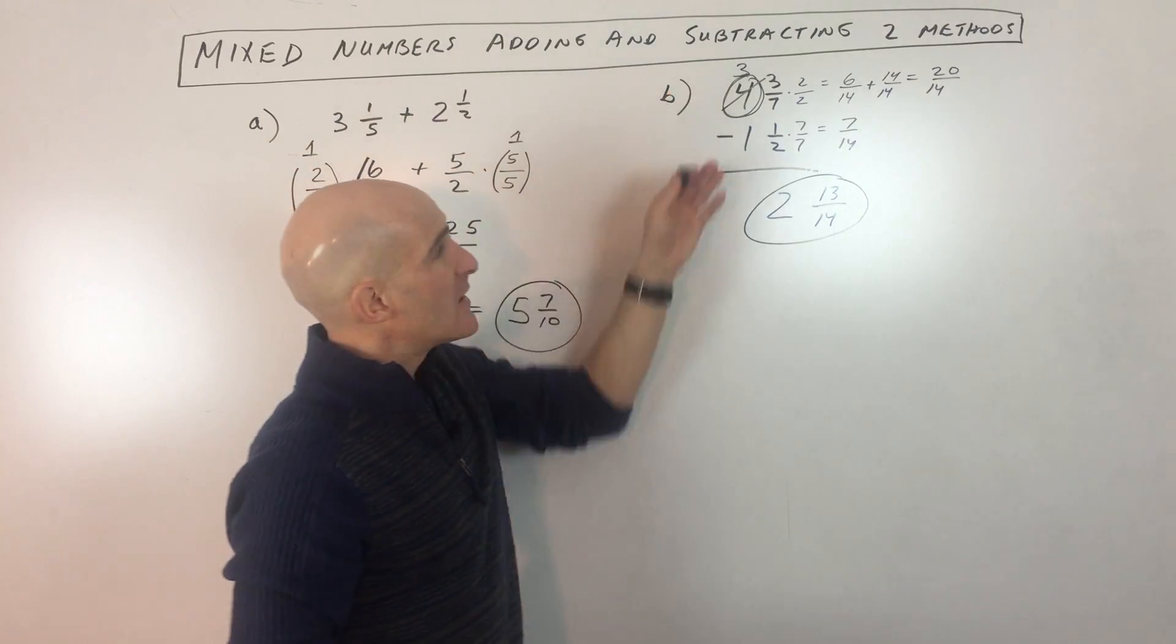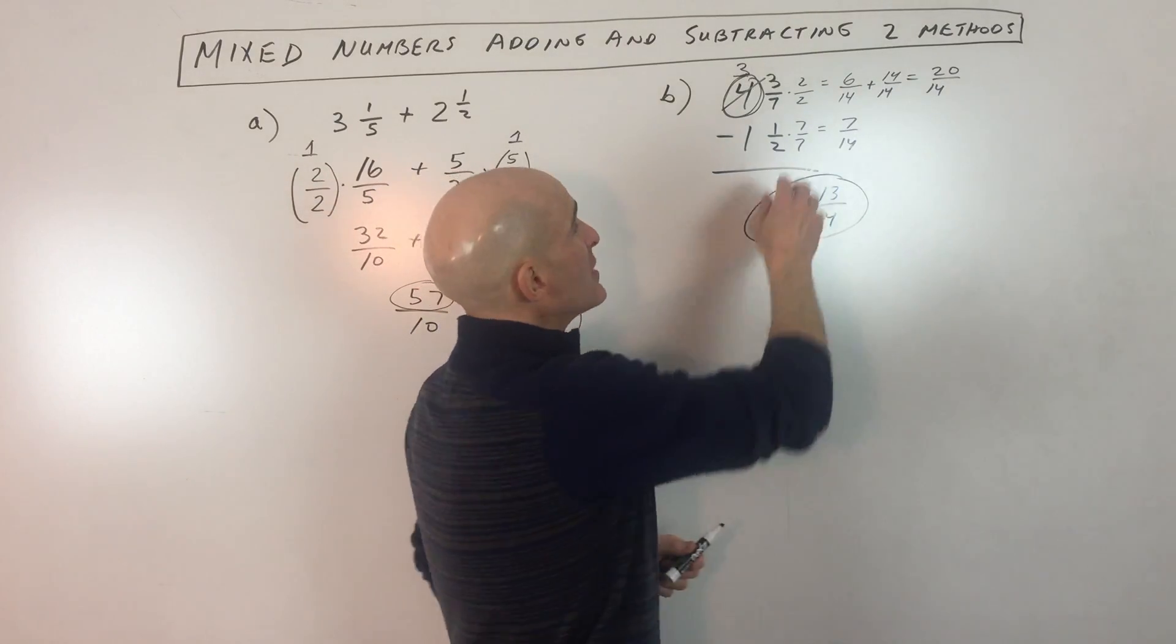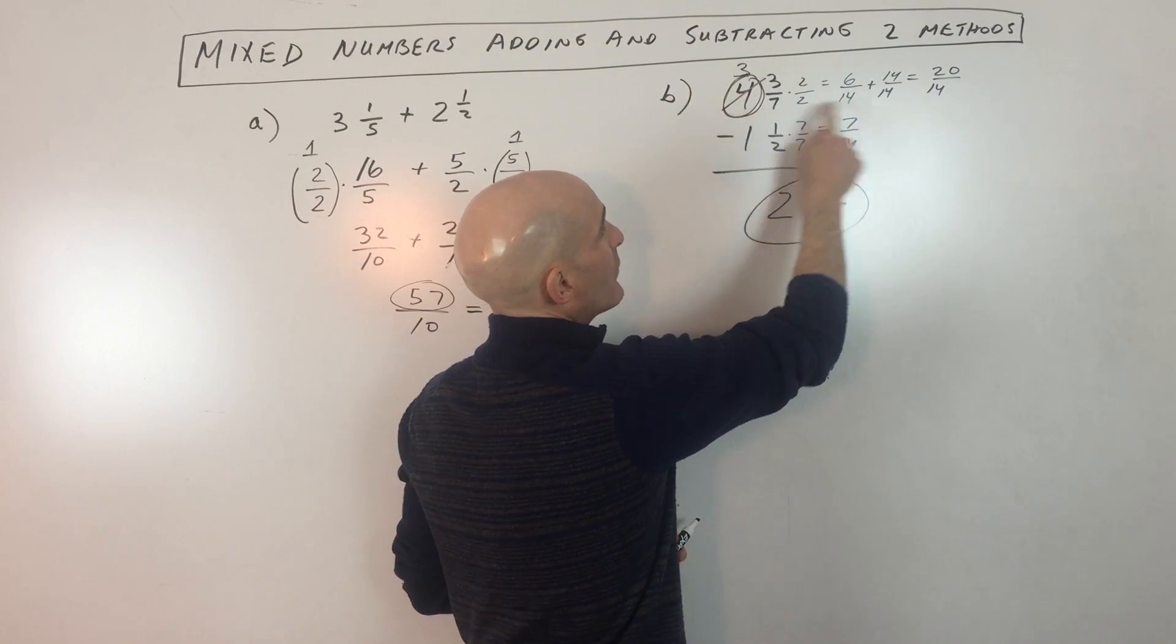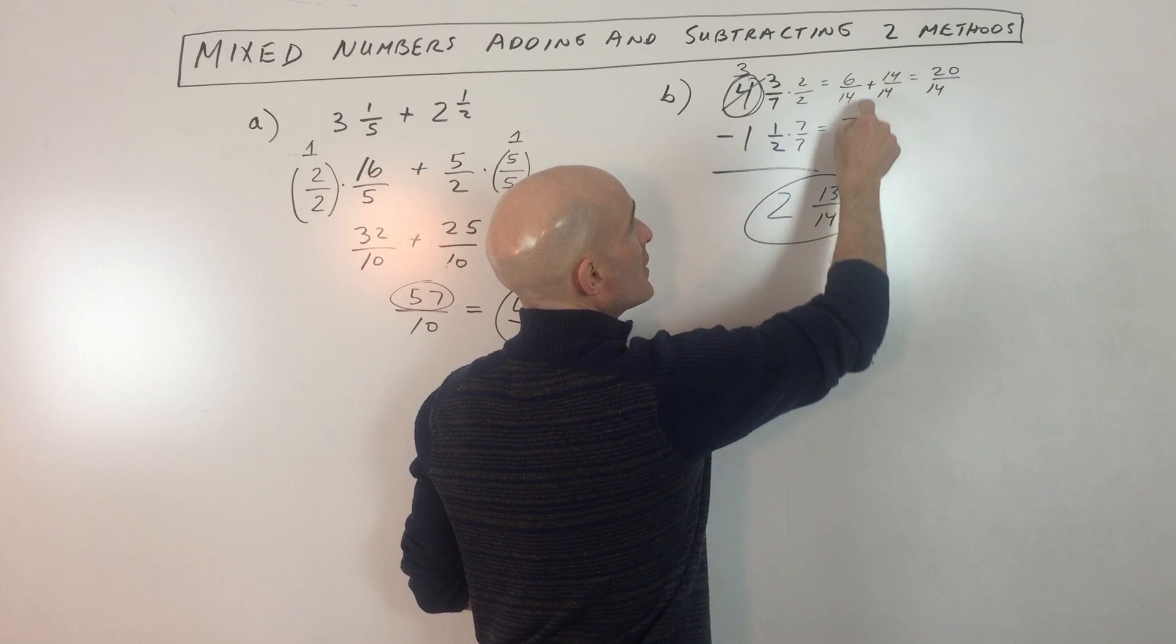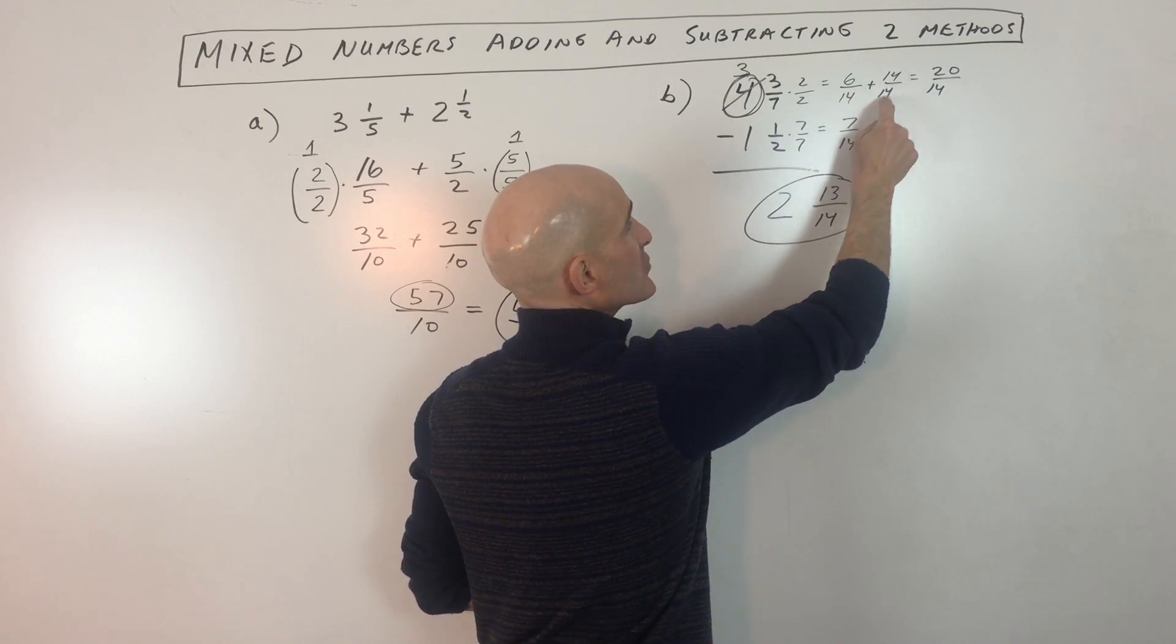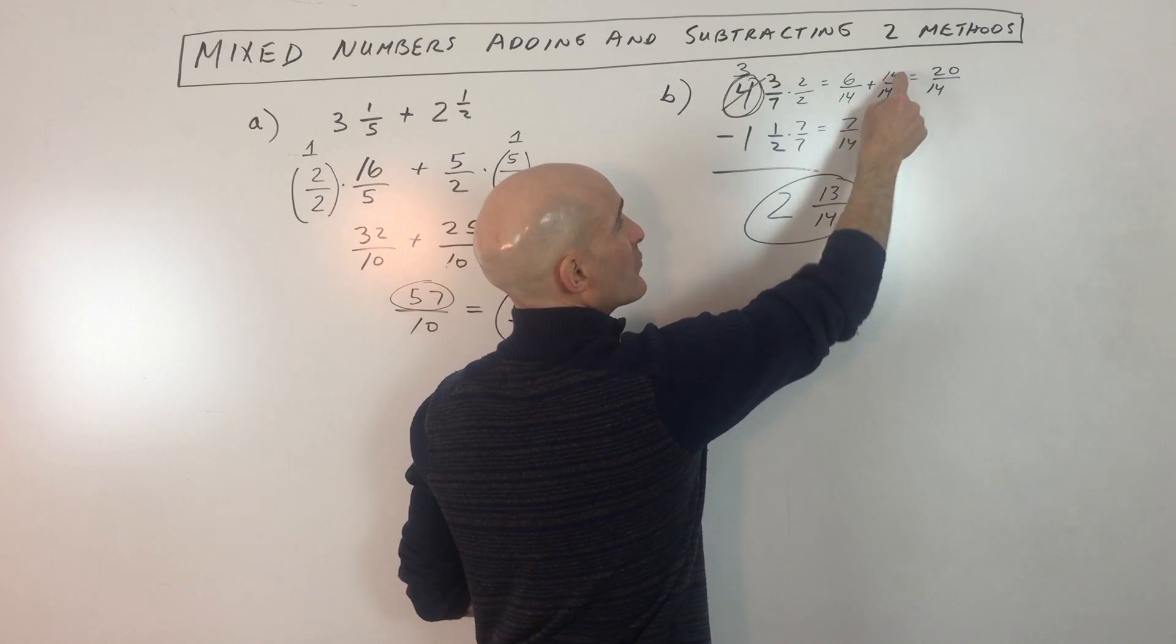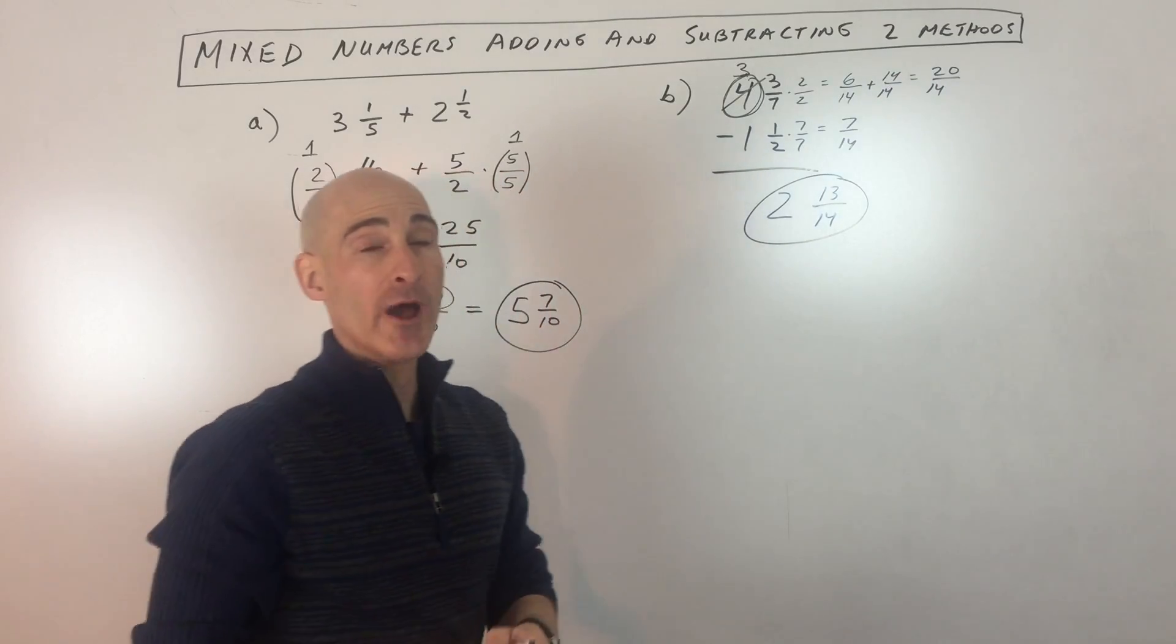Whereas here, this is a little bit trickier, but it's a little bit quicker. Sometimes you have to borrow from the whole number, and you want to make sure that you're borrowing the same denominator. So the 14 over 14. If this was 10, I would borrow 10 over 10, which is still one.